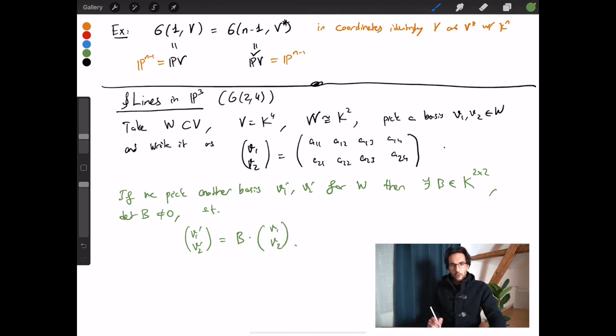And the converse is also true. So if I take any invertible matrix 2 by 2 and apply it to v1, v2, then I will just get another basis for w. In other words, the over-parameterization of subspaces of V via this coordinate system, via these 2 by 4 matrices, is exactly captured by invertible 2 by 2 matrices.